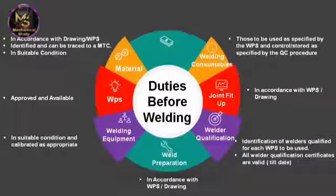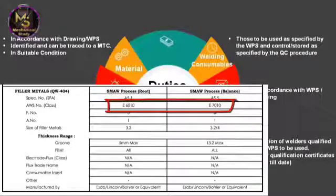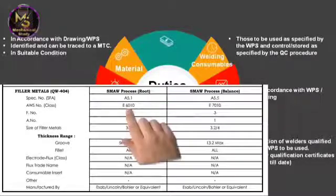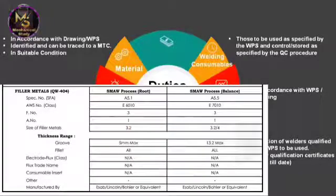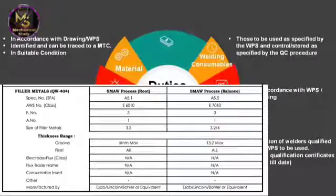Welding consumables should be used as specified in the WPS. If you are using low hydrogen electrodes, they should be controlled and stored as specified. In this image, which is a cropped part of a WPS, you can see two different types of electrodes: E6010 is used for the root pass, and E7010 is used for the rest of the process.